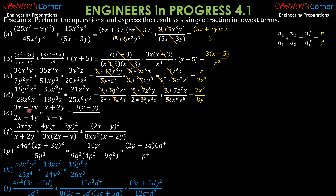Next: this is 3 times (x − y) over 2(x + 2y), times (x + 2y) over (x − y). We cancel (x − y) and (x + 2y). So what remains is 3/2.